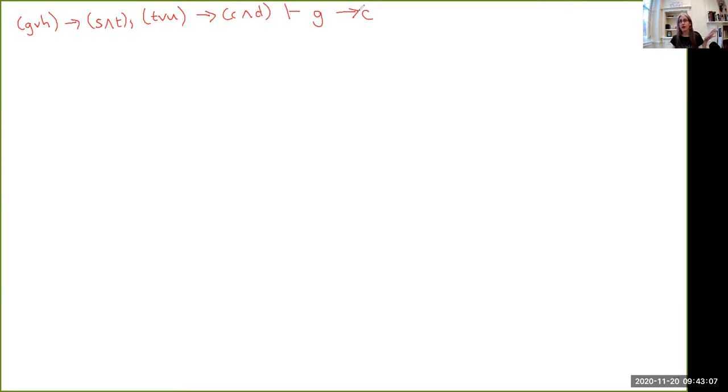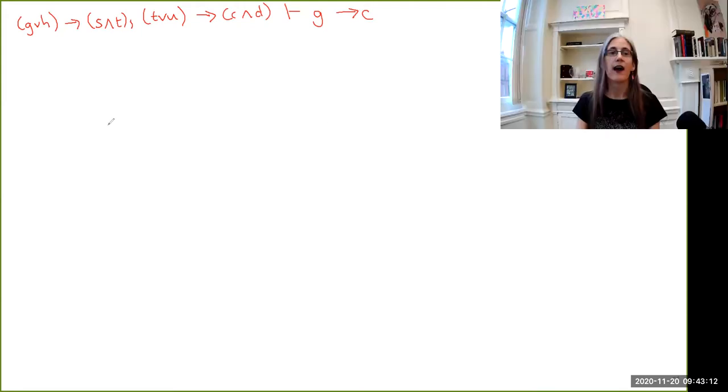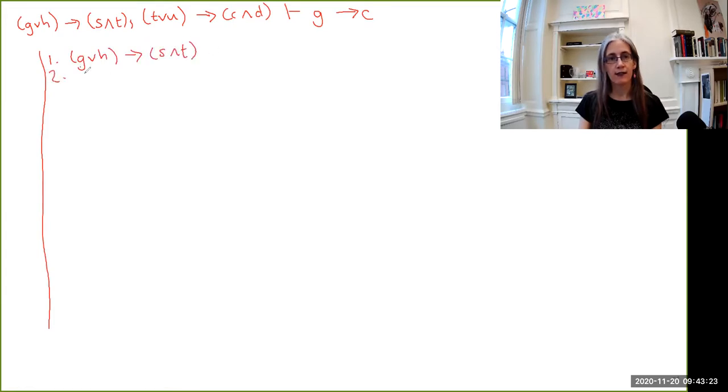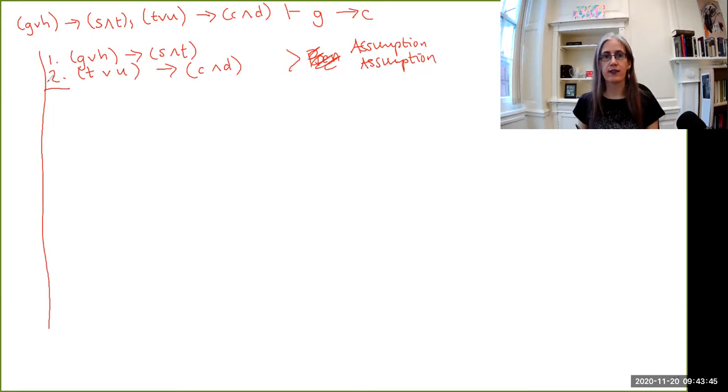So left-hand side of our turnstile are the premises, right-hand side is the conclusion. How does every single proof start? Every single proof starts by writing down your premises as assumptions. So we have if G or H then S and T, and T or U then C and D. So these are our premises, but what allows us to write them down in our proof is the assumption rule.